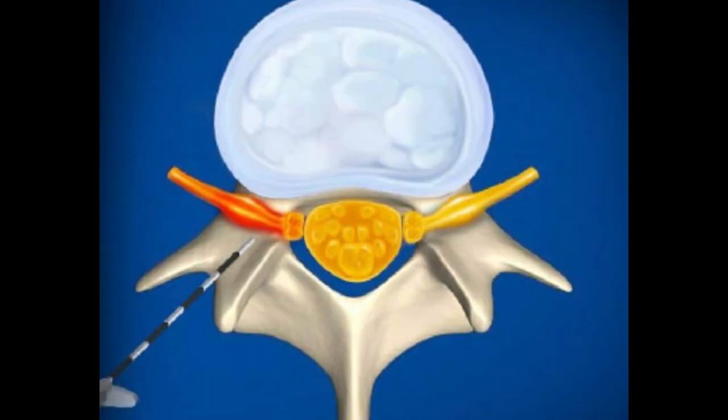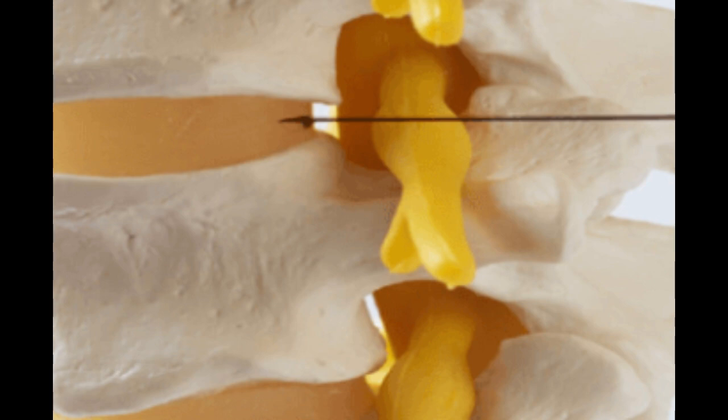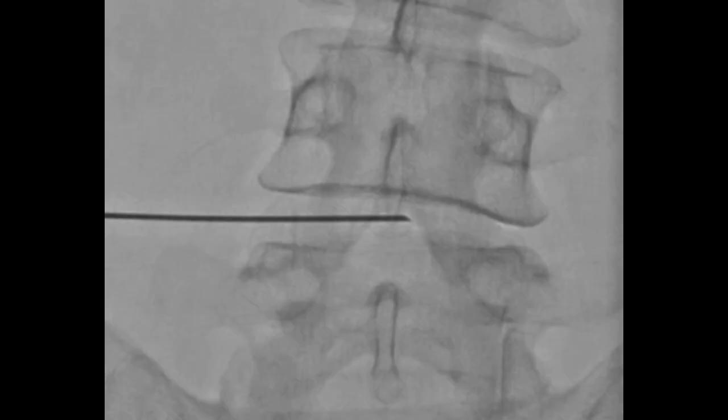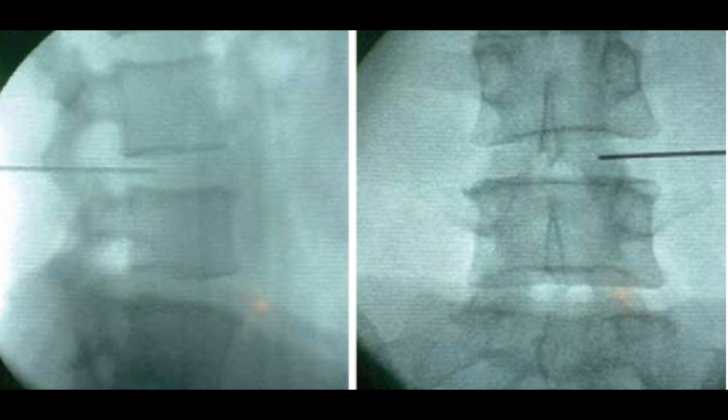A steroid injection mixed with local anesthetic solution is injected near the swollen and tender nerve root in the foramen. Then the needle is passed within the disc and a steroid injection is given within as well. This changes the local chemical composition and reduces swelling of the inflamed edges of the annular tear.